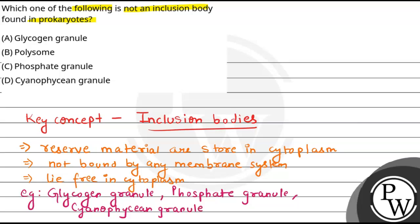Now we can say that our options A, C and D are incorrect because they are a part of inclusion bodies. As an inclusion body which is not part of inclusion body, which is our option B. So, which is the correct option? Option B, that is polysomes.